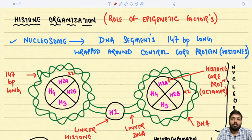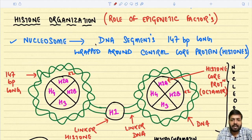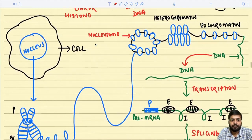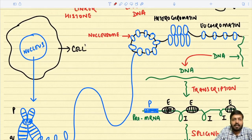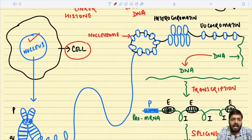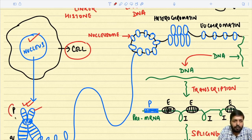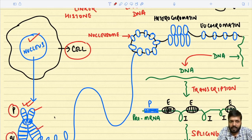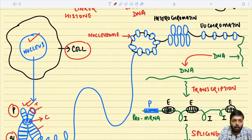Now we are going to understand histone organization. Looking at this diagram, we see a normal cell with a nucleus. The nucleus is made up of chromosomes. An individual chromosome has two arms: the short arm called the p arm (petit) and the long arm called q — because q comes after p. The chromosome also has a centromere in the center and telomeres at the chromosomal ends.